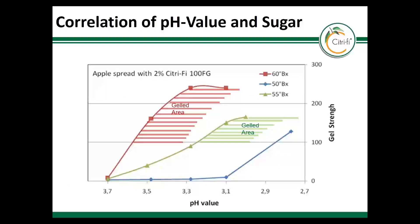We use texture measurements to study various conditions, and some results of those trials are summarized in this graph — an excellent tool to use as a starting point when formulating. In this scenario, 2% Citrify is used. Gelling occurs when the gel strength is at 100 or more. You can see the interaction of sugar and acid on the graph: higher Brix and a lower pH generate a stronger gel. Below 55% sugar or soluble solids, the HM-pectin type cannot form the junction zones needed for a real gel, but Citrify still provides viscosity — much more than cellulosic fibers.